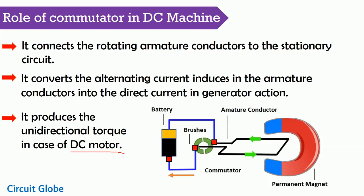In case of DC motor, the commutator is used for producing the unidirectional torque. Consider this is the image of the DC motor. This is the armature of the motor, and it is connected to the external circuit by the help of the commutator and brushes. Here we are using the split ring commutator. Split ring commutator means there is a gap between the rings of the commutator.